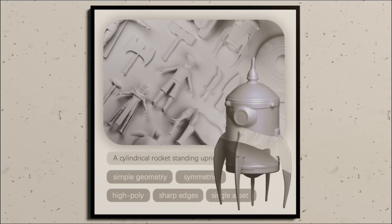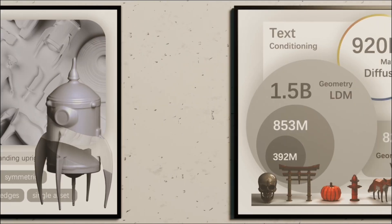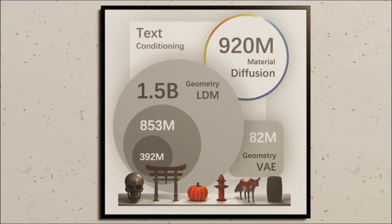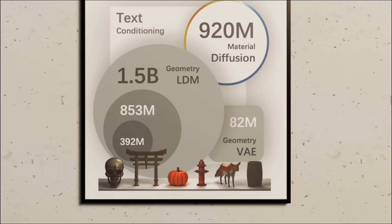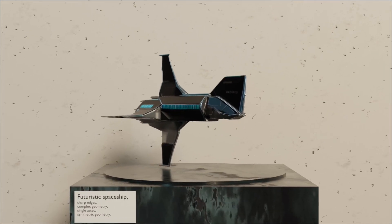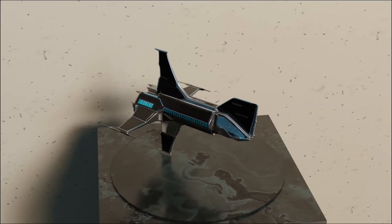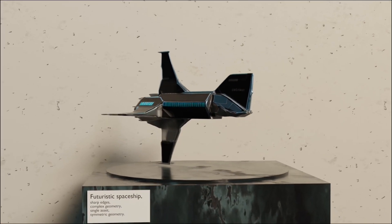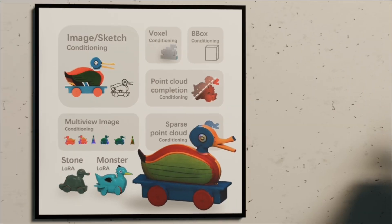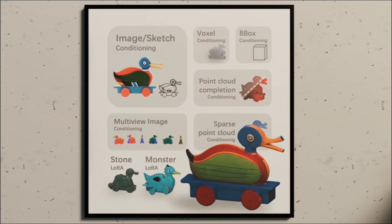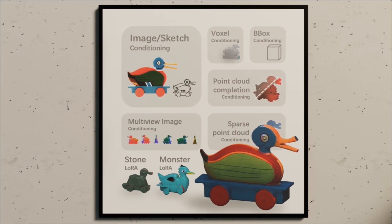Trained on an extensive 3D dataset, Clay features a 1.5B geometry model and a 1B material model. Within a minute, Clay can generate detailed 3D assets with PBR materials adaptable to various conditions from text, image to 3D.